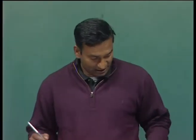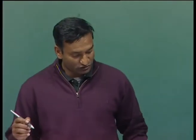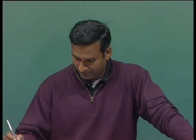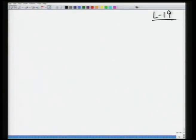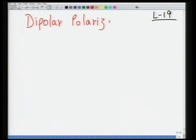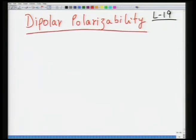We are now going to take up dipolar polarizability. This is lecture 19. Dipolar polarizability occurs when dipoles are present and exist independent of each other, meaning the material has a permanent dipole moment.